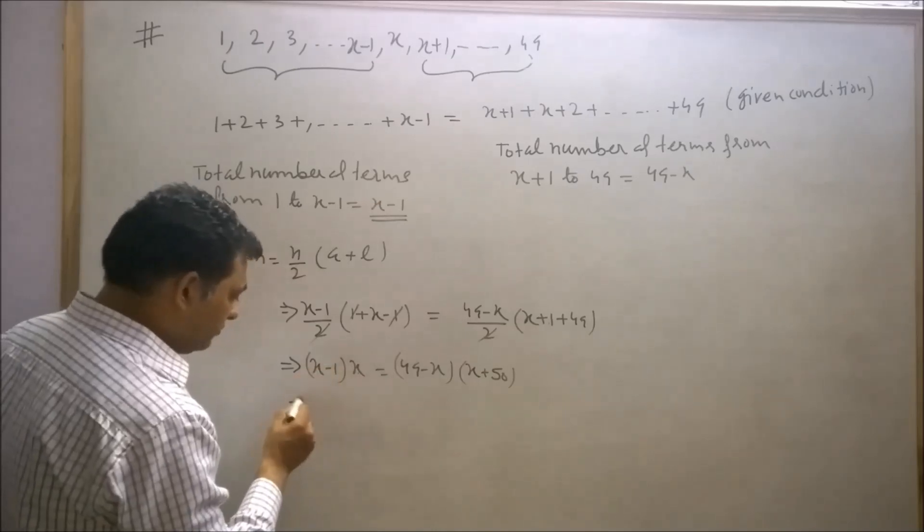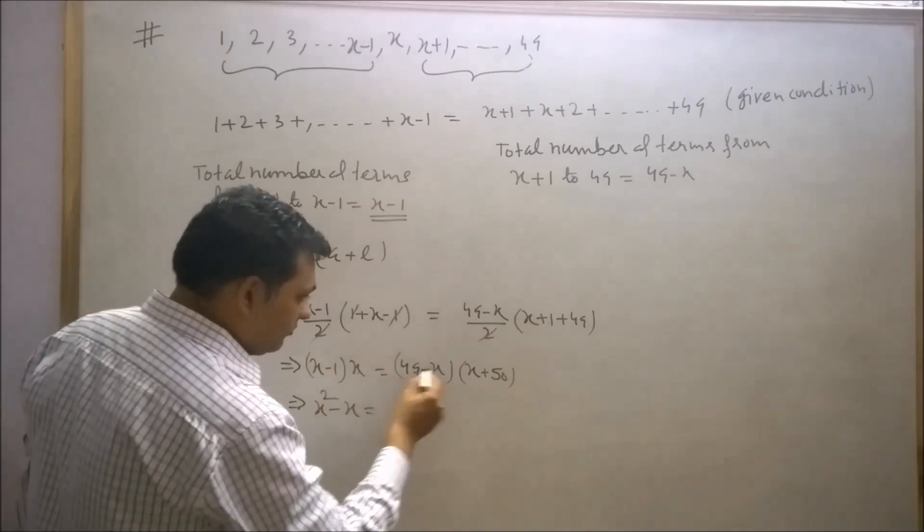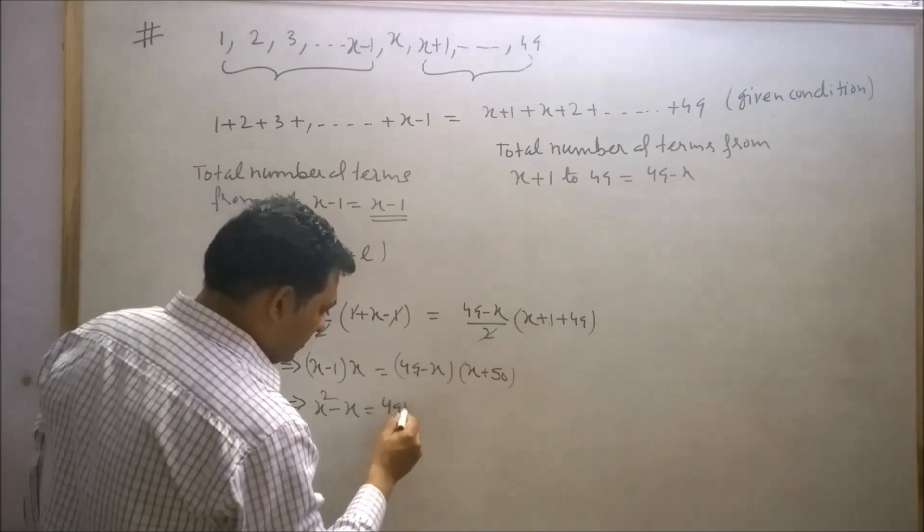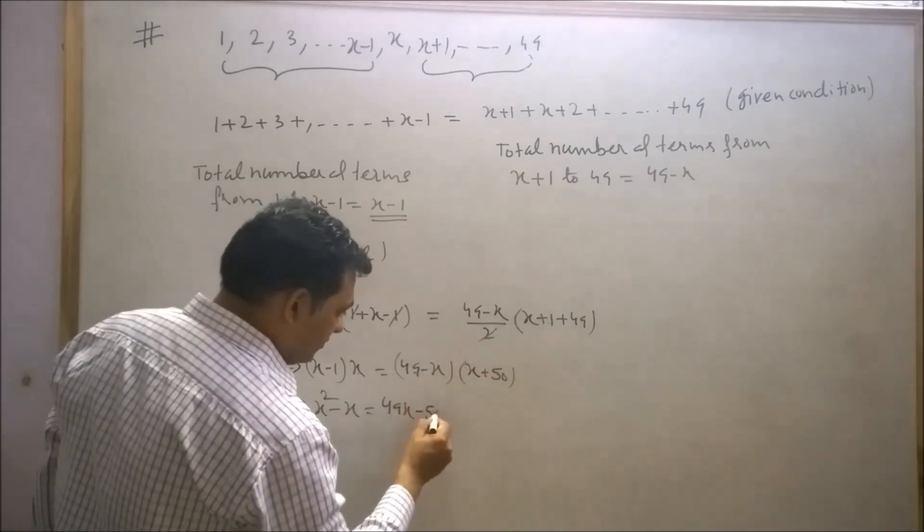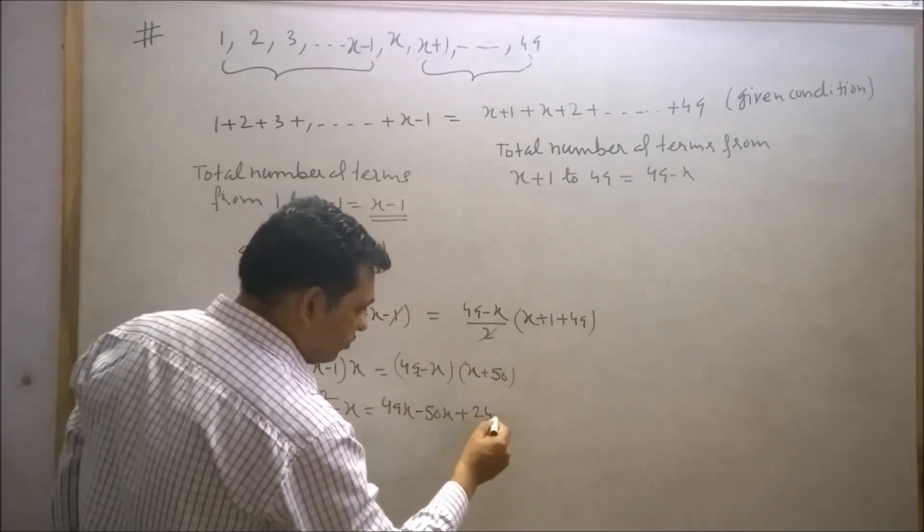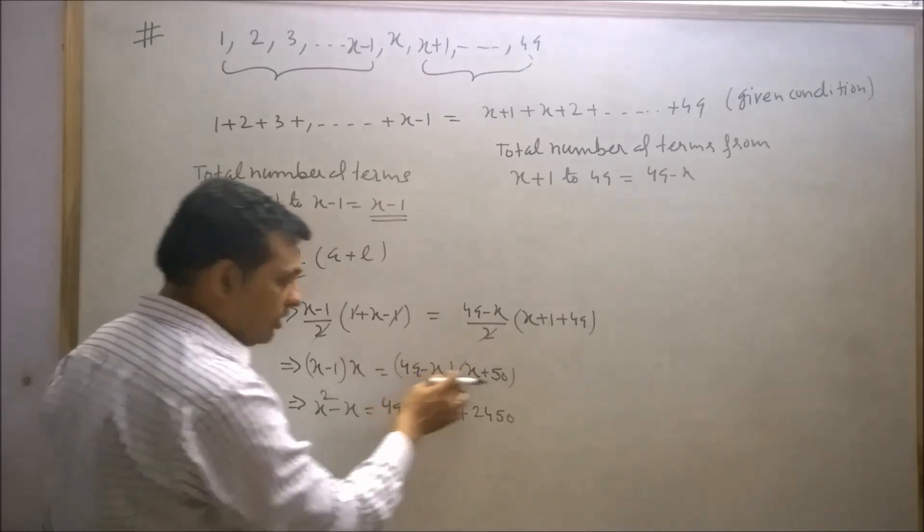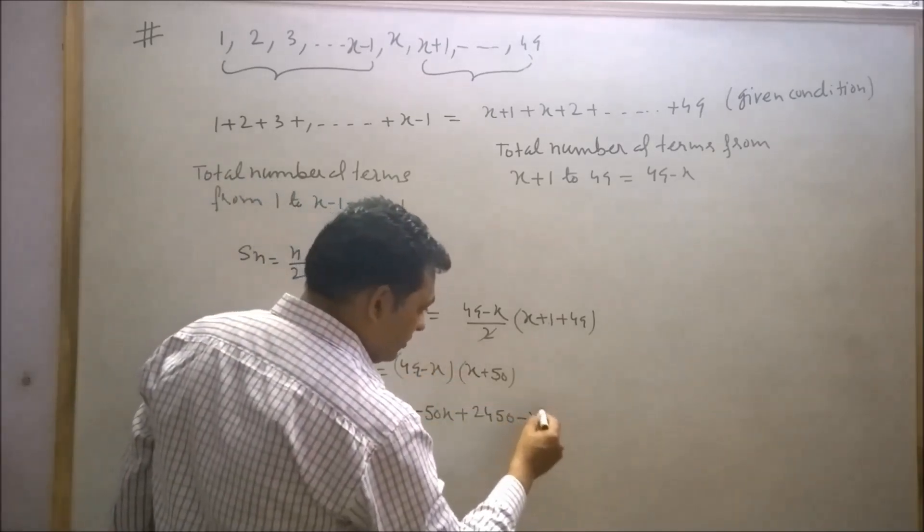(x-1) times x is equal to (49-x) times (49 and 1, 50). This will be x plus 50. This will be x² - x.